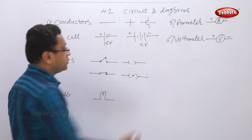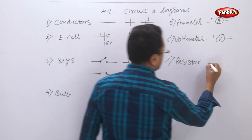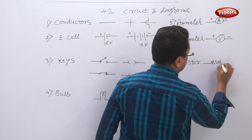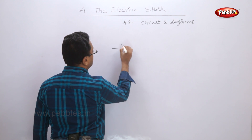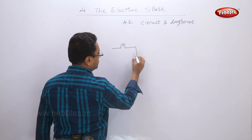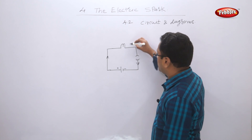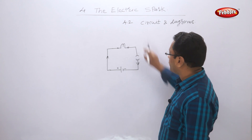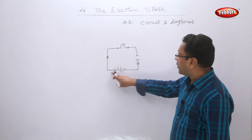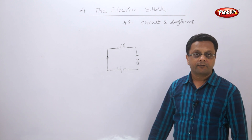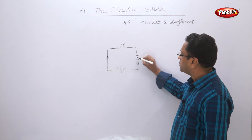Resistance is symbolized with a specific symbol in circuit diagrams. Let us consider a simple circuit diagram with only one bulb and one key. Always remember, the convention of showing electric current is from positive to negative. Consider there is a one-meter wire — the circuit is closed, so the bulb glows.